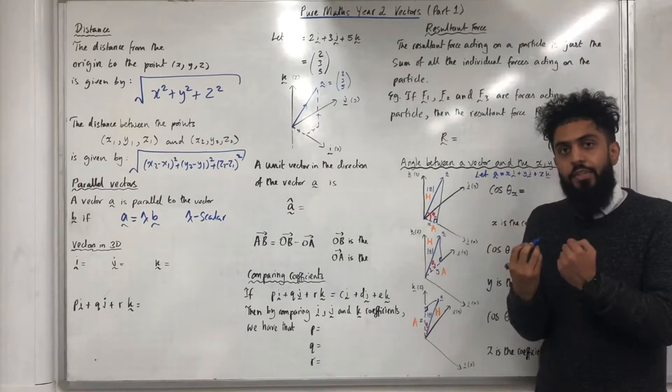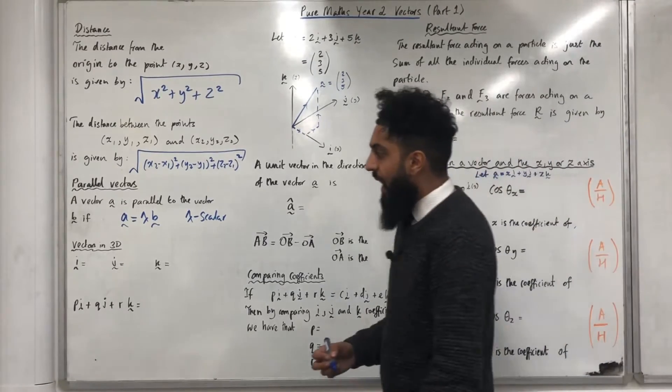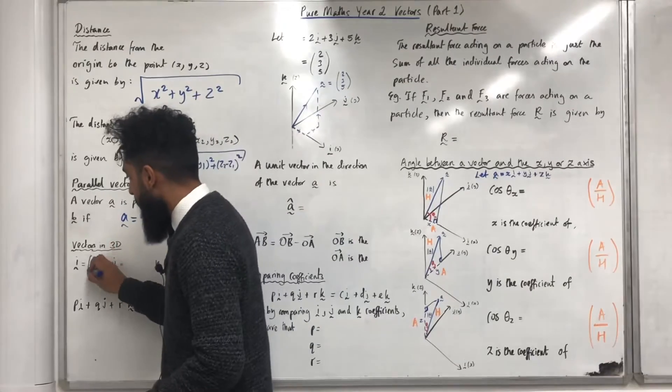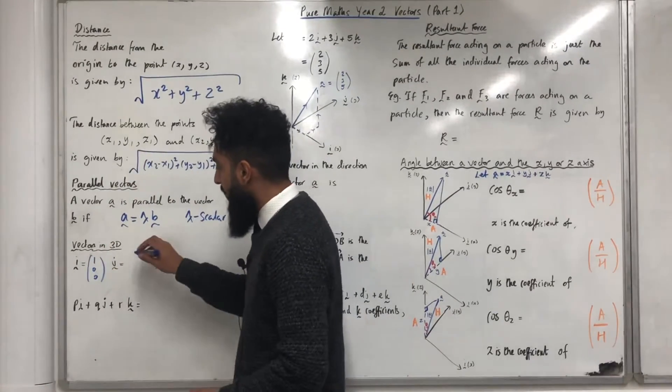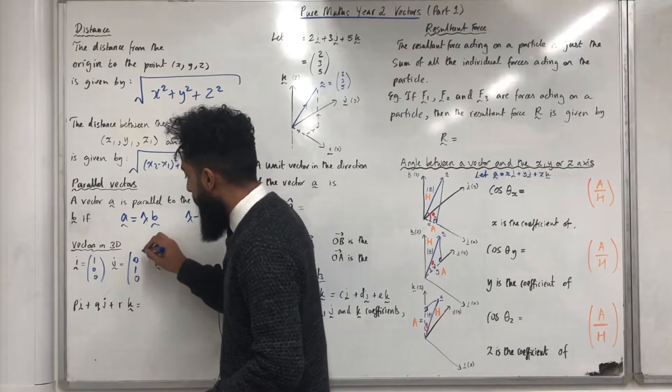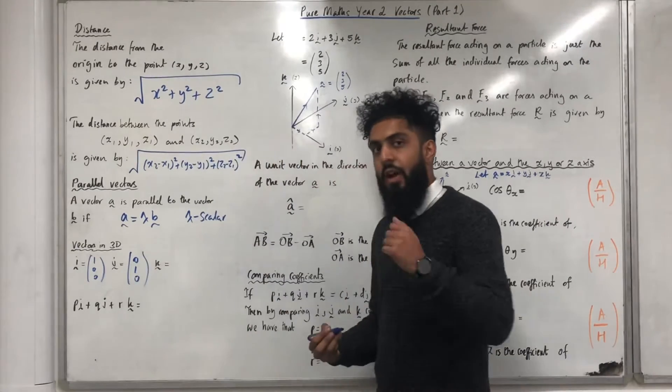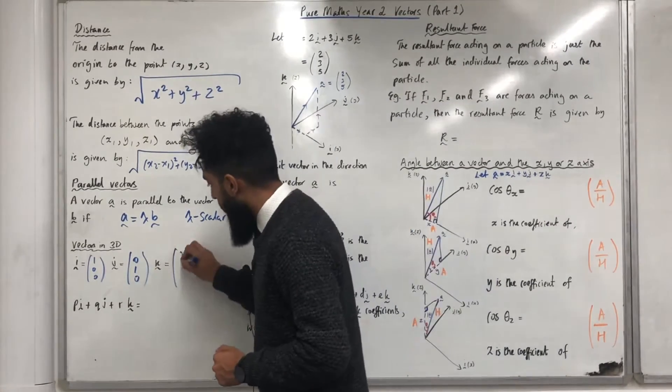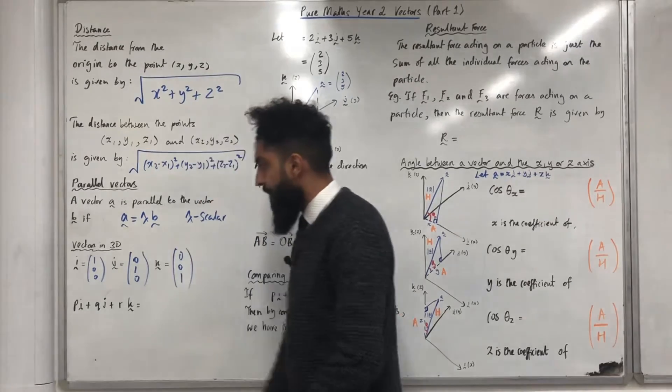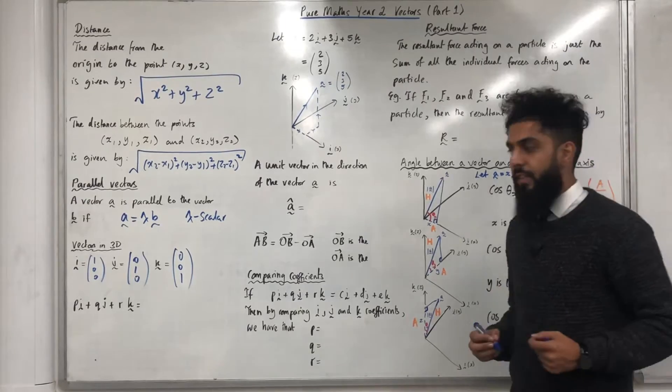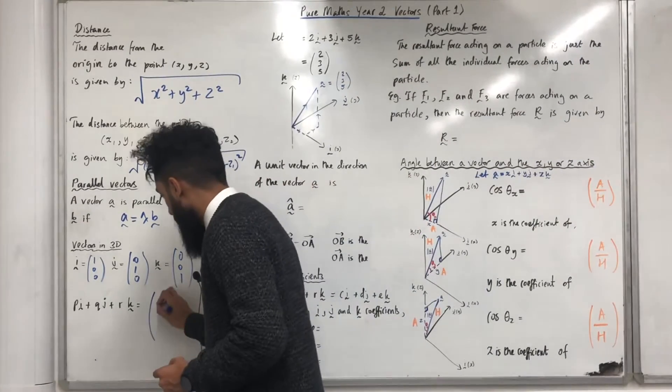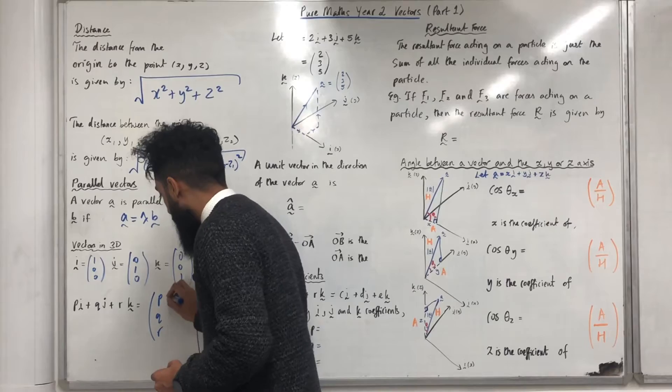Vectors in three dimensions. The unit vector i as a column vector is just 1, 0, 0. The unit vector j as a column vector is 0, 1, 0. The unit vector k as a column vector is 0, 0, 1. The vector pi plus qj plus rk as a column vector is just p, q and r.